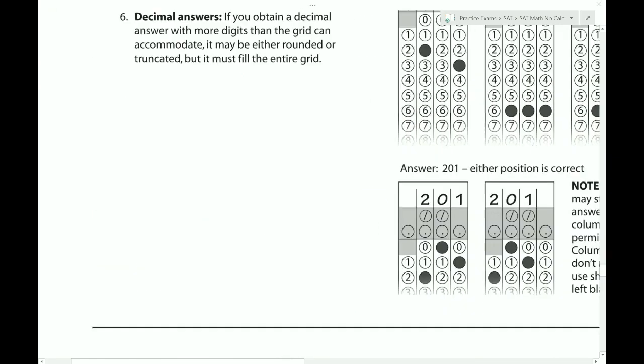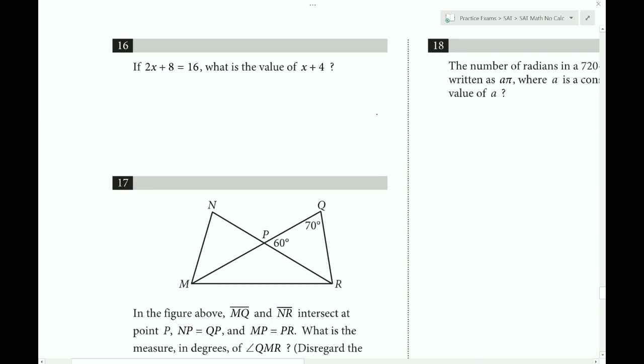So we're now in the grid-ins. They want x plus four. So there may be a little shortcut here. If we factor out a two, notice how we get what we want in the parentheses. We can then divide by two. And we get eight for our result.